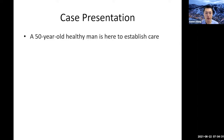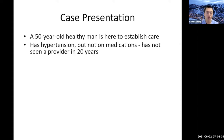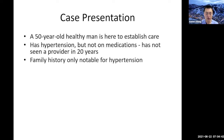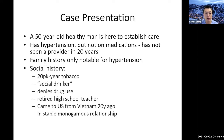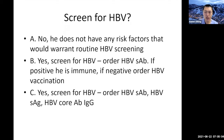So we'll start with the case. This is a 50-year-old man wanting to establish care in your clinic. He has history of hypertension, no medications, and he actually hasn't seen a provider in over 20 years. Family history is notable for hypertension. His social history has a 20-pack year smoking history, he's a social drinker, denies drug use. He's a retired high school teacher, and he emigrated from Vietnam to the U.S. about 20 years ago, and he is in a stable monogamous relationship.